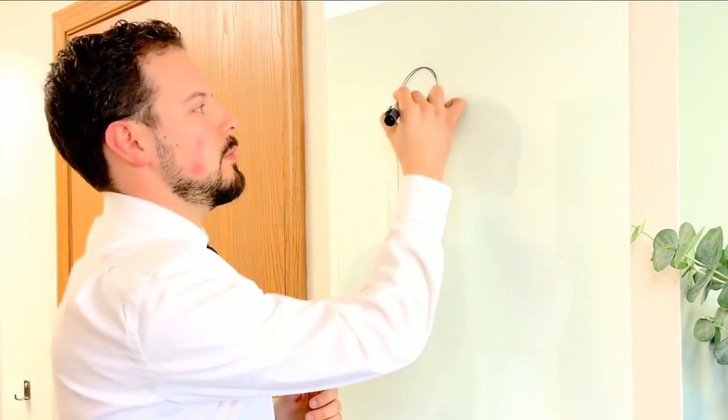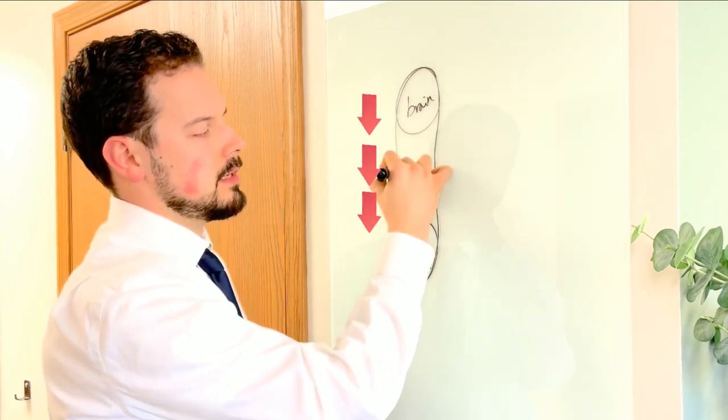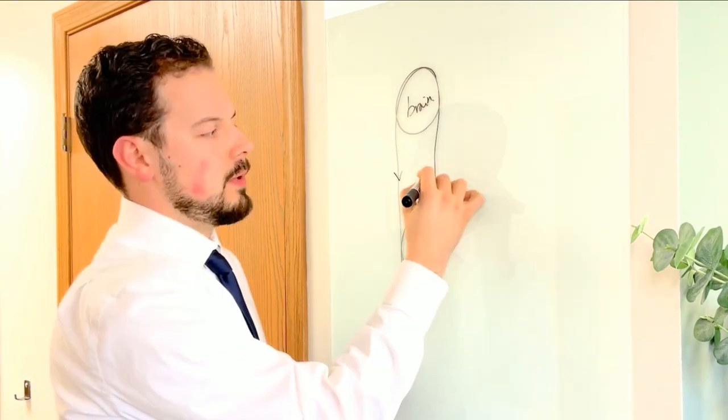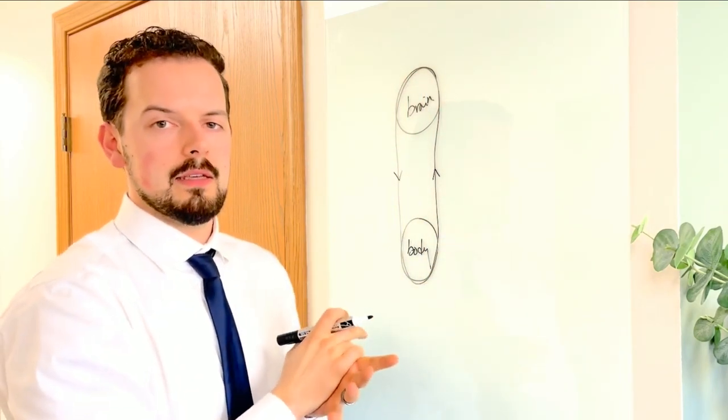Here's a safety pin. We got the brain up here and the body down here. When we have a connection here, we have signals coming down from the brain to the body and from the body back up to the brain. This is alignment. This is ease in the system.